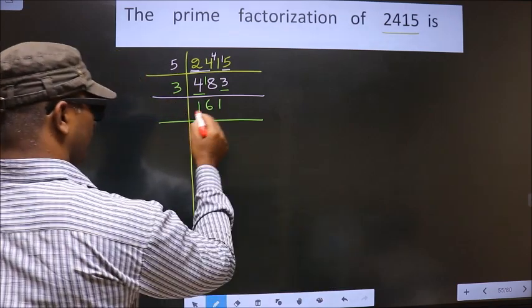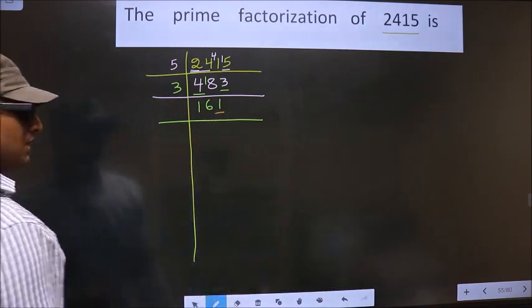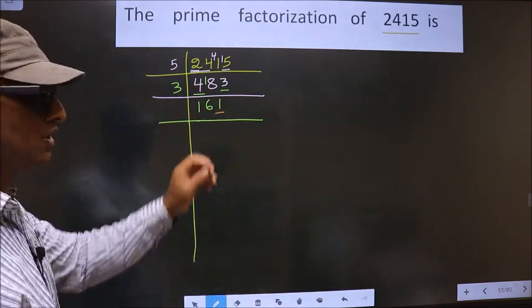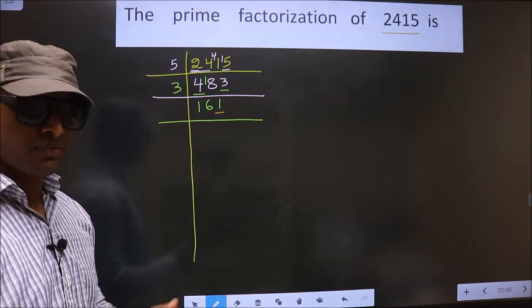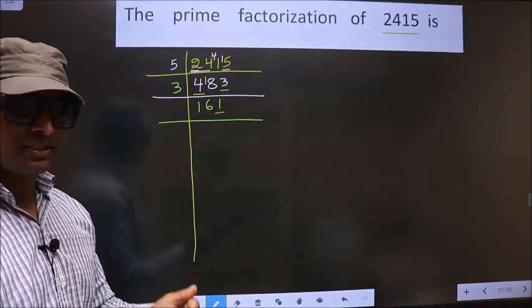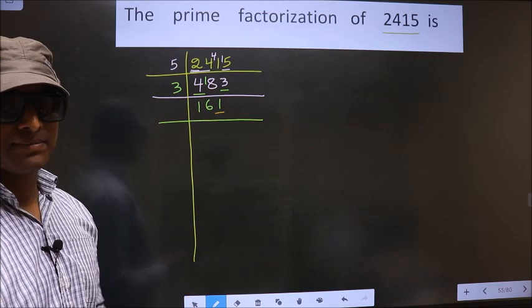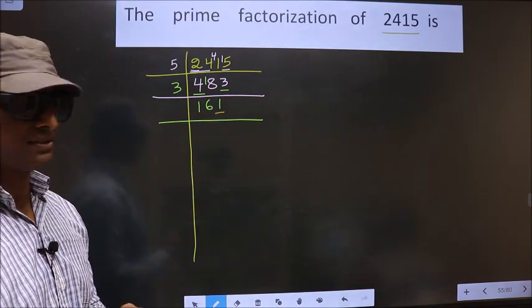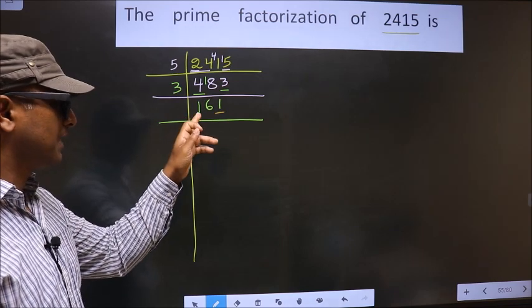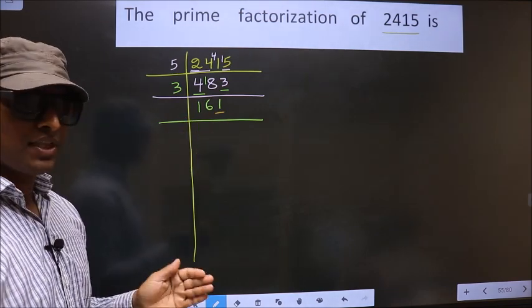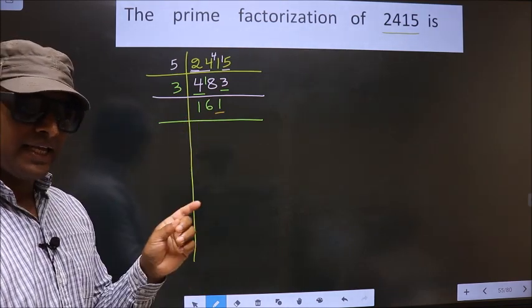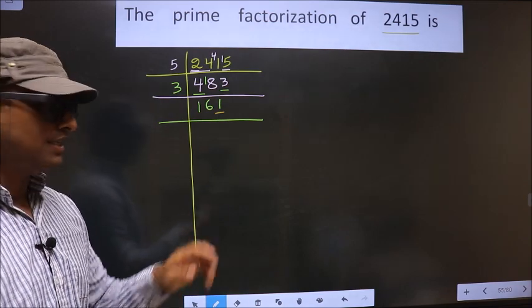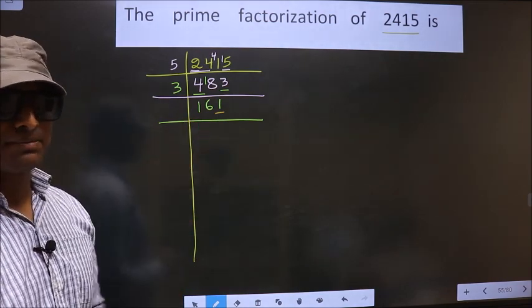Now for this number, last digit is 1 which is not even, so this is not divisible by 2. Next prime number is 3. To check divisibility by 3, we should add the digits. That is 1 plus 6 plus 1. We get 8. 8 is not divisible by 3, so this number is also not divisible by 3.